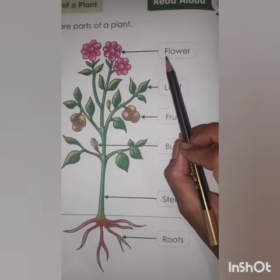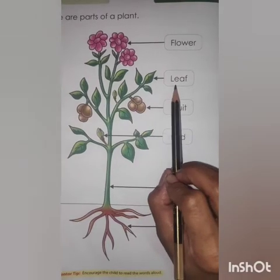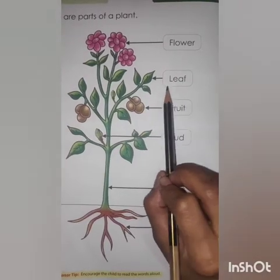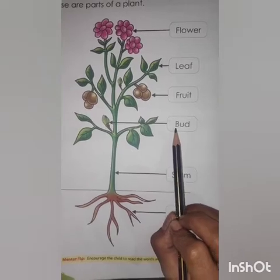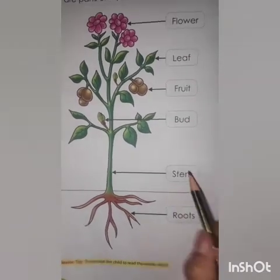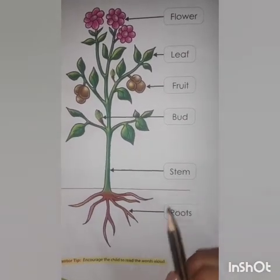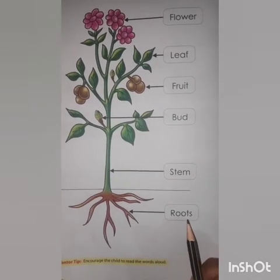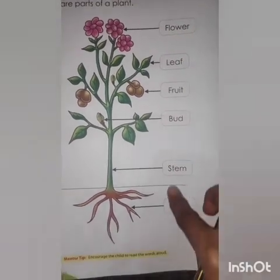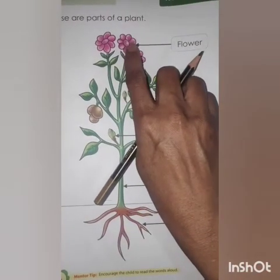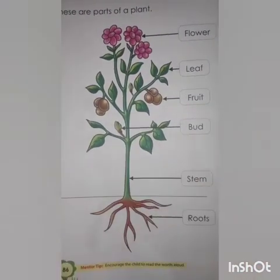So to summarize: F-L-O-W-E-R flower. L-E-A-F leaves. F-R-U-I-T fruit. B-U-D bud. S-T-E-M stem. R-O-O-T-S roots. These are the parts of a plant.